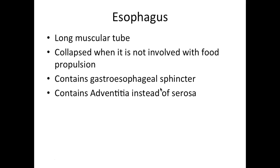The pharynx eventually becomes the esophagus. The esophagus is this long muscular tube — it is mostly composed of smooth muscle, and remember smooth muscle is for involuntary movement. Once you swallow the food it's going to go down, you have no control of it after that point. In fact, it's so strong that if you stood upside down after swallowing, the esophagus would still contract and push the food down to your stomach.